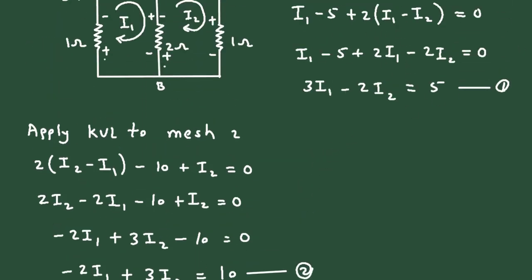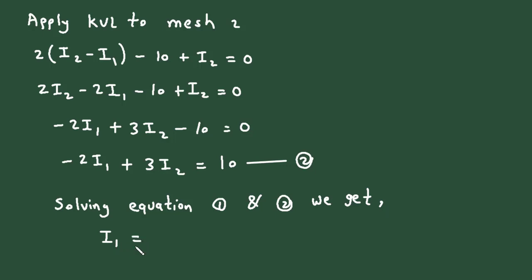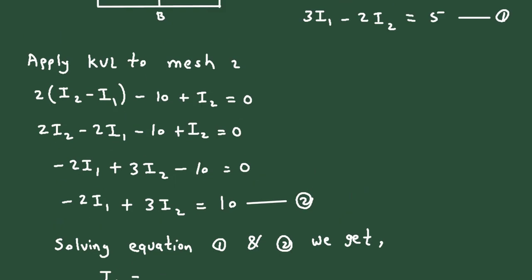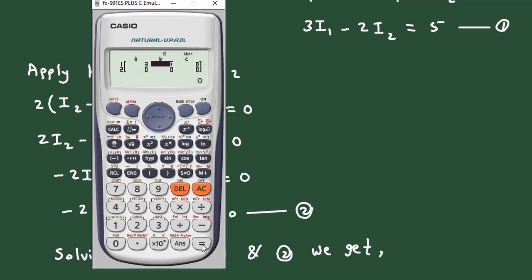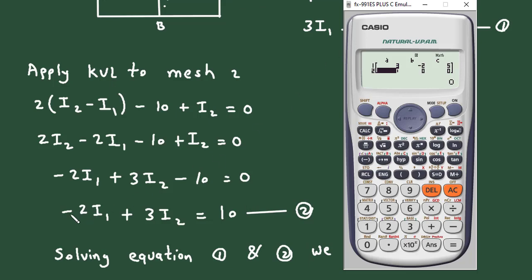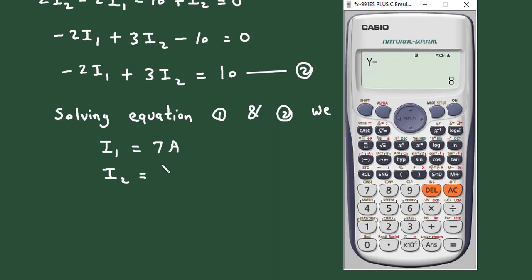Now we have two equations — equation 1 and equation 2. Solving them using a calculator with the coefficient matrix [3, -2; -2, 3] and constants [5, 10], we get I1 equals 7 amperes and I2 equals 8 amperes.